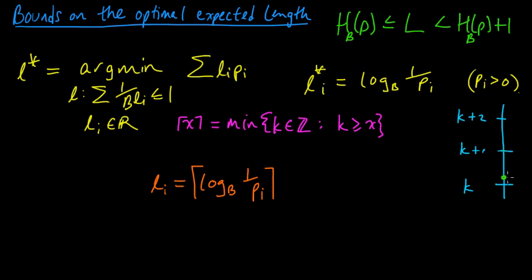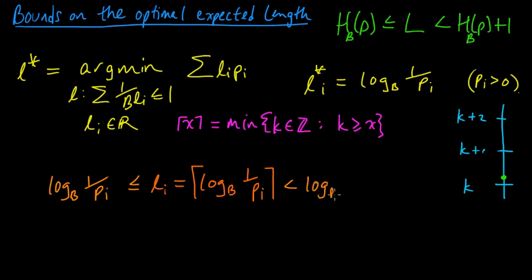What can we say about these lengths? Well, l_i is certainly greater or equal to log_b(1/p_i), since we rounded up. And it is strictly less than log_b(1/p_i) + 1, because when we round up we move less than one unit — if we're between two integers we move less than one, and if we're already at an integer we stay there and don't add a whole one.